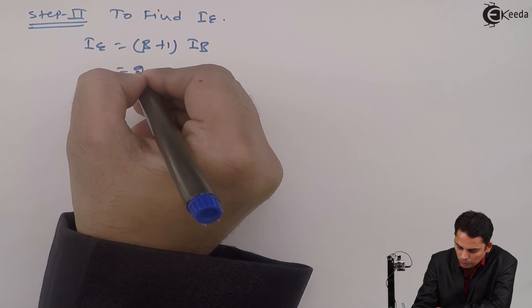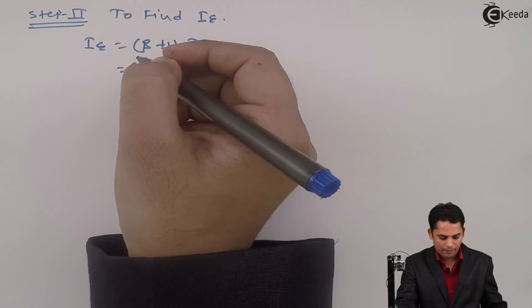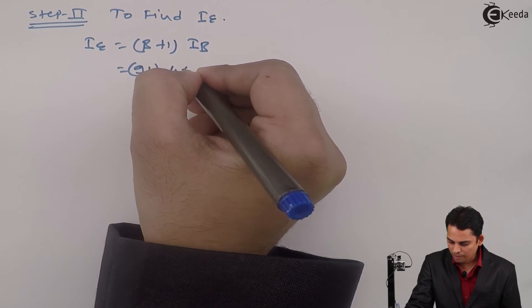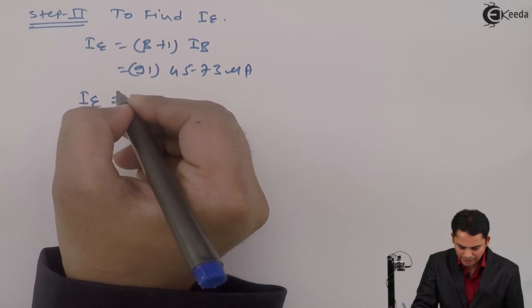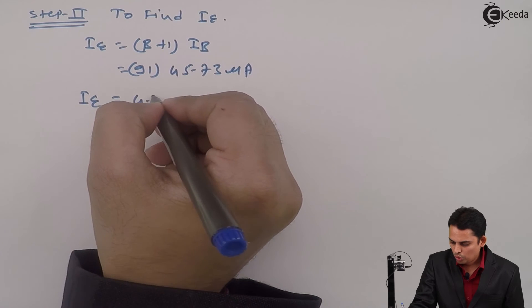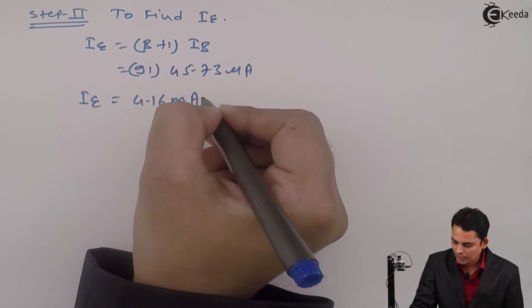And hence it is equal to 91 multiplied by 45.73 micro amperes. And hence IE is equal to 4.16 milli amperes.